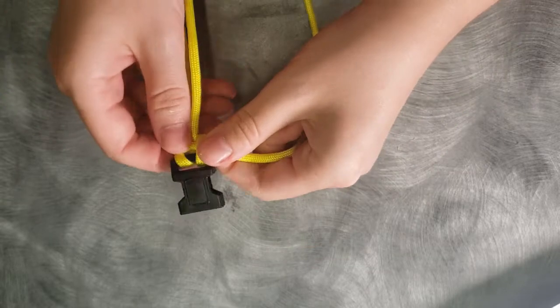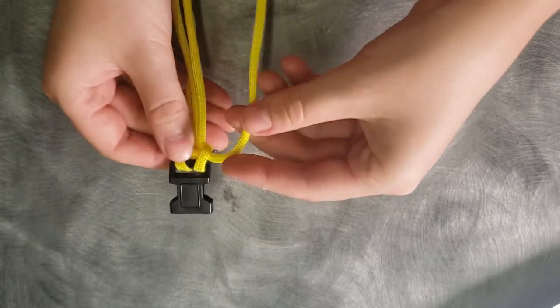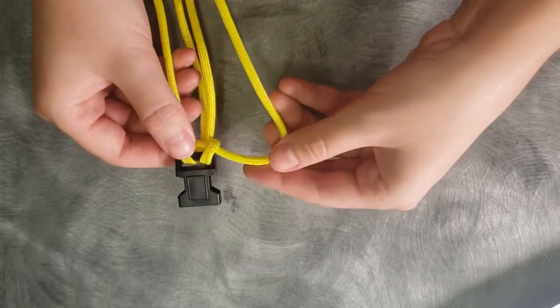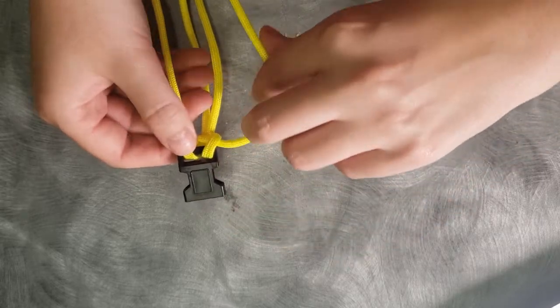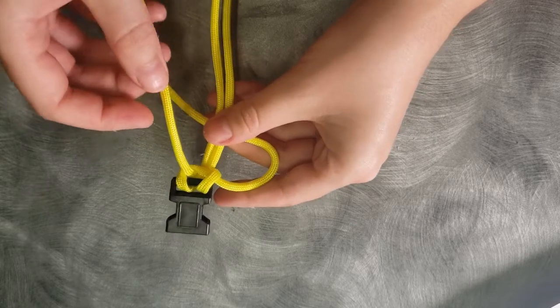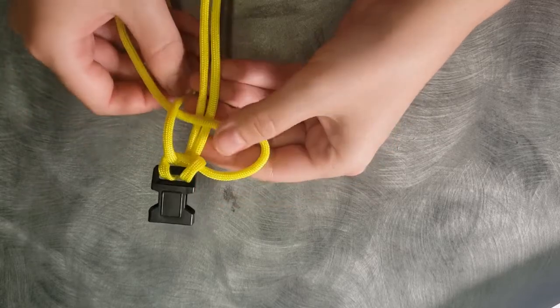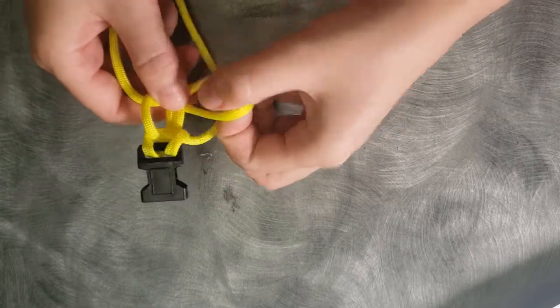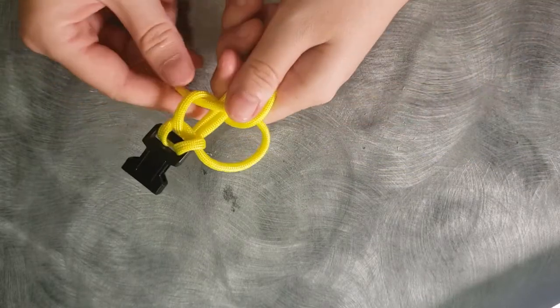Now we pulled it tight with this side, so now we're going to make a loop with this side. Make a loop over the two, then you take the other side. It goes over the one, under, and through the loop. And then we tighten.